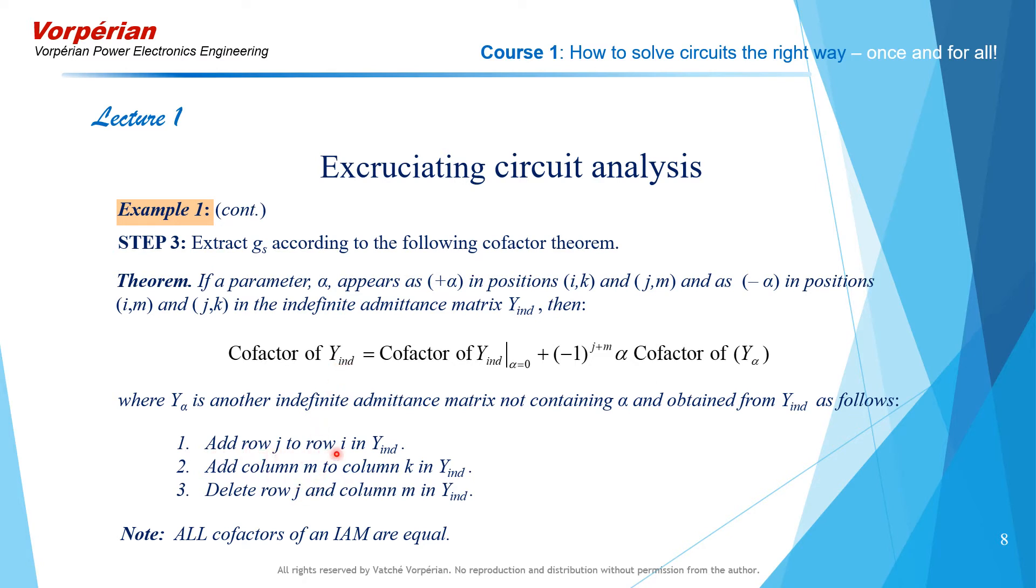y sub alpha is another indefinite matrix that is obtained from yind by the following three operations: add row j to row i, add column m to column k, delete row j and column m, and that's how you eliminate the parameter Gs from the indefinite matrix and you obtain y alpha.